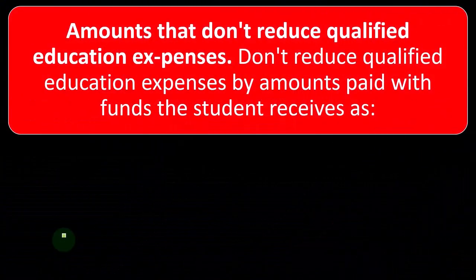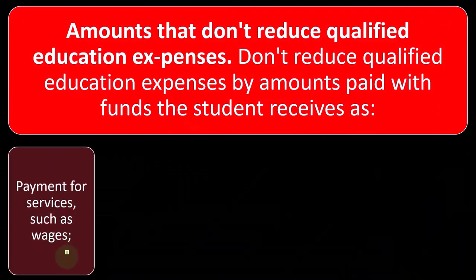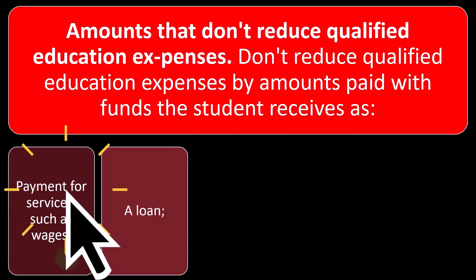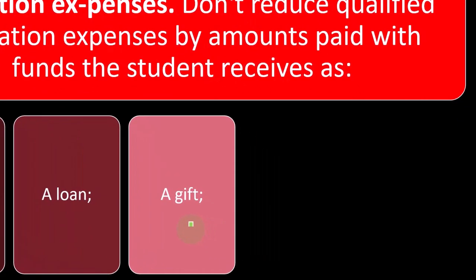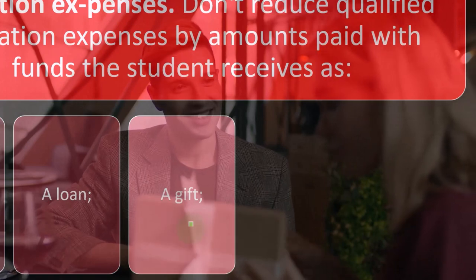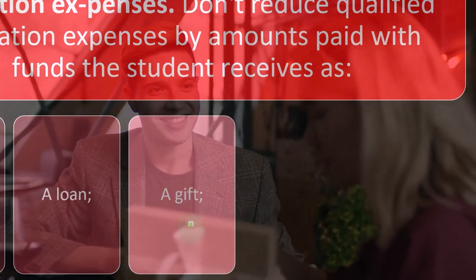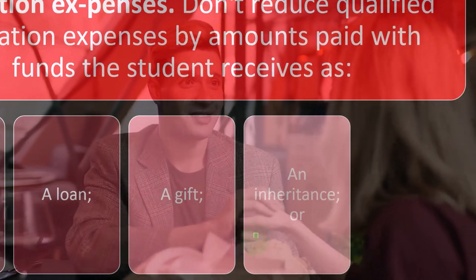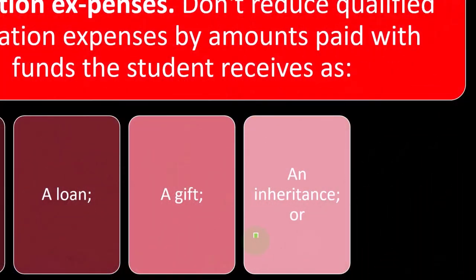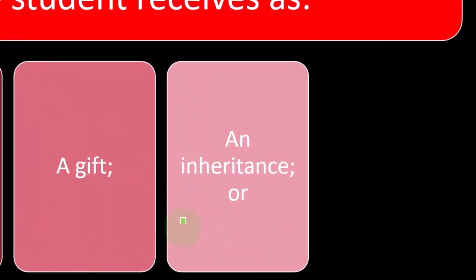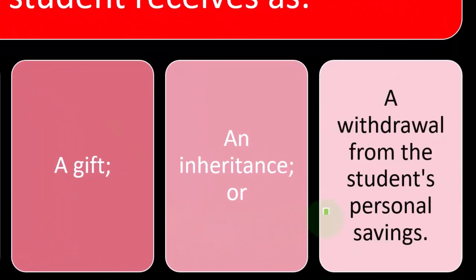Amounts that don't reduce qualified education expenses: don't reduce qualified education expenses by amounts paid with funds the student received as payment for services, such as wages, because those are included in income. A loan is not the same thing as a grant because you're going to have to repay the loan. A gift is something gifted to you — that's not the same as a grant or free money, but it's a gift situation. And an inheritance is similar to a gift, except the individual died and may have even been subject to estate tax.